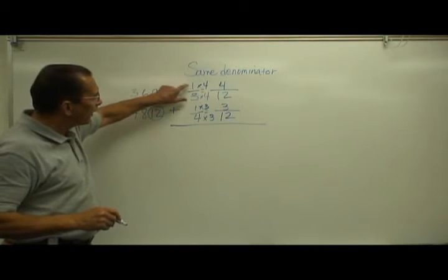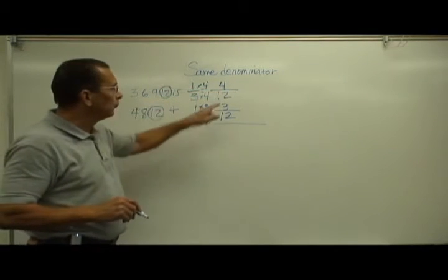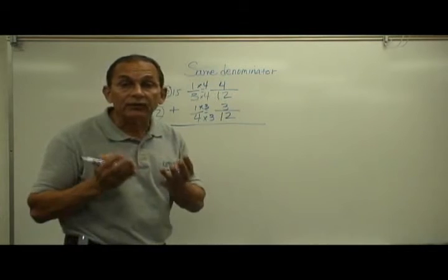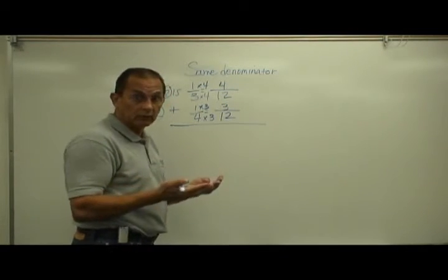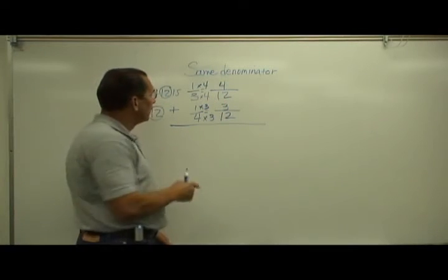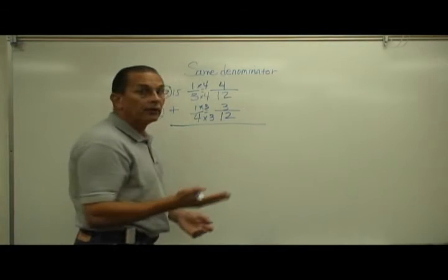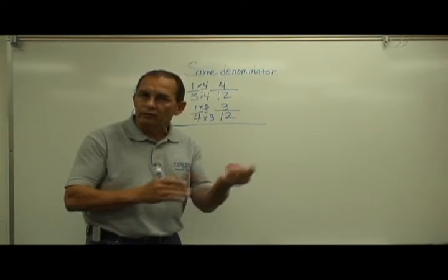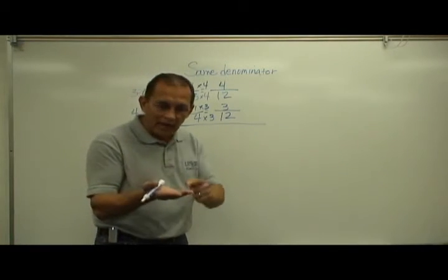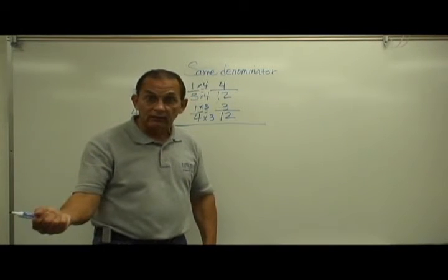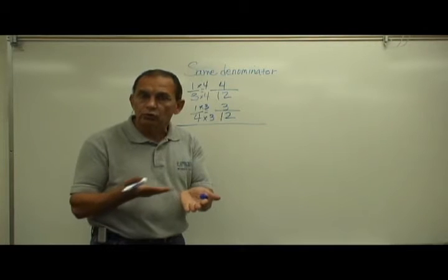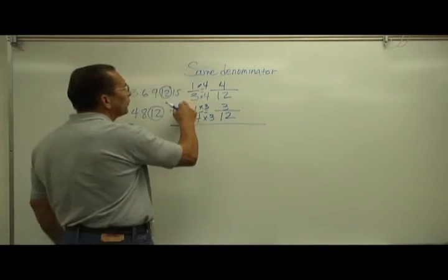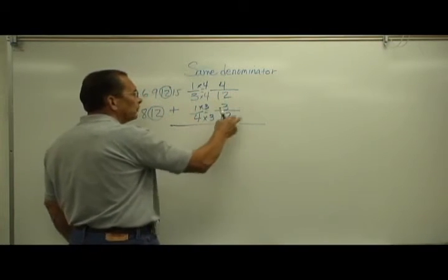Now I have taken one-third and created an equivalent fraction with a denominator of twelve. One-third and four-twelfths have the exact same value — there's no difference. They're equivalent; they just look different. Likewise, one-fourth and three-twelfths are equivalents with the exact same value. For example, if I had two quarters in this hand, I'd have fifty cents, and if I have five dimes in this hand, I also have fifty cents — exactly equal, but they look different. The same idea here: one-third is equivalent to four-twelfths, and one-fourth is equivalent to three-twelfths.